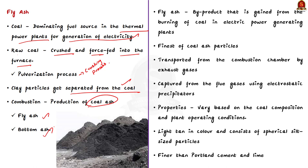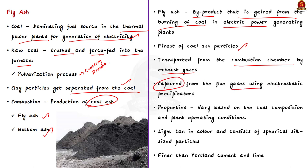Fly ash is a byproduct gained from the burning of coal in electric power generating plants. It is the finest of coal ash particles, termed 'fly ash' because it is transported from the combustion chamber by exhaust gases. It is generally captured from the flue gases using electrostatic precipitators. There are no standard properties of fly ash; they vary based on coal composition and plant operating conditions.